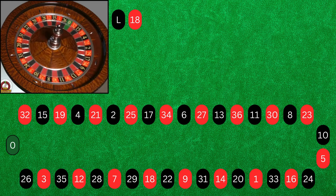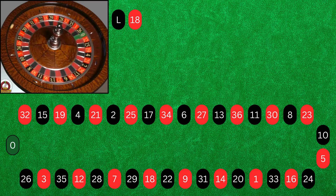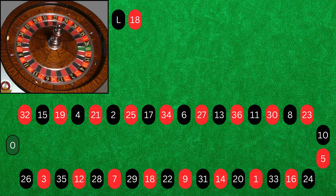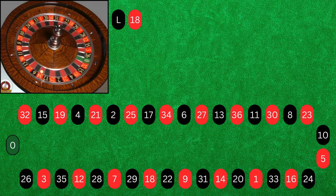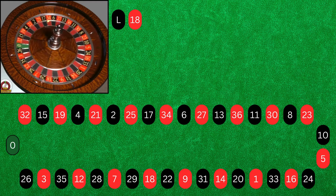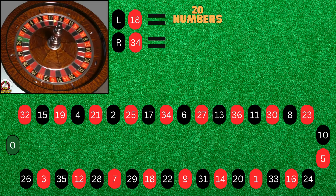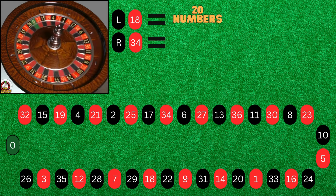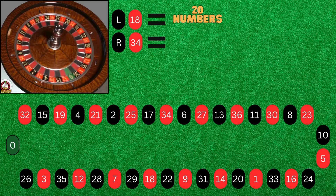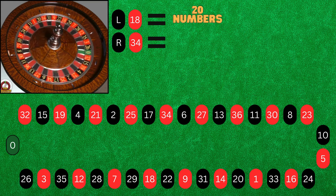The first number starting from 18 is a left spin. We see that it landed in pocket 34, that being 20 pockets to the left. Now we know the starting number for the next spin, which will be a right spin, and we will gather data on this one for how many pockets for the right spin.